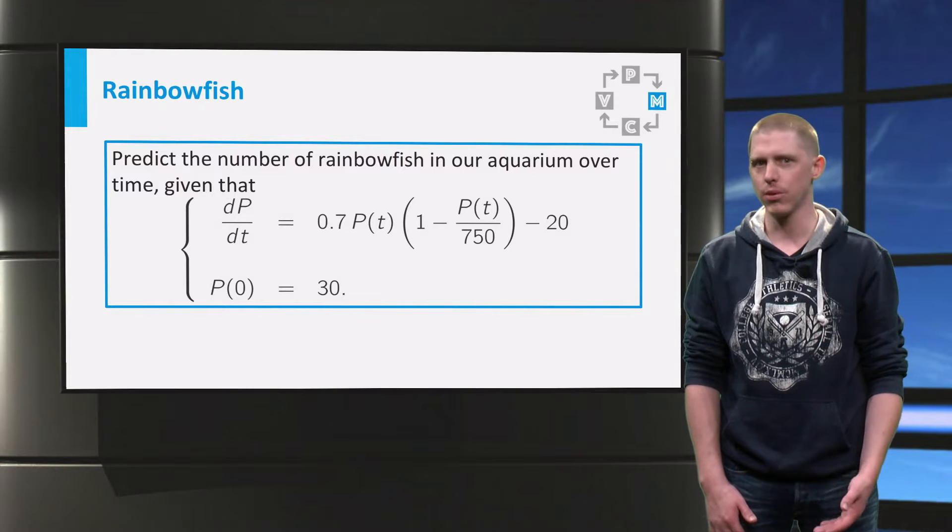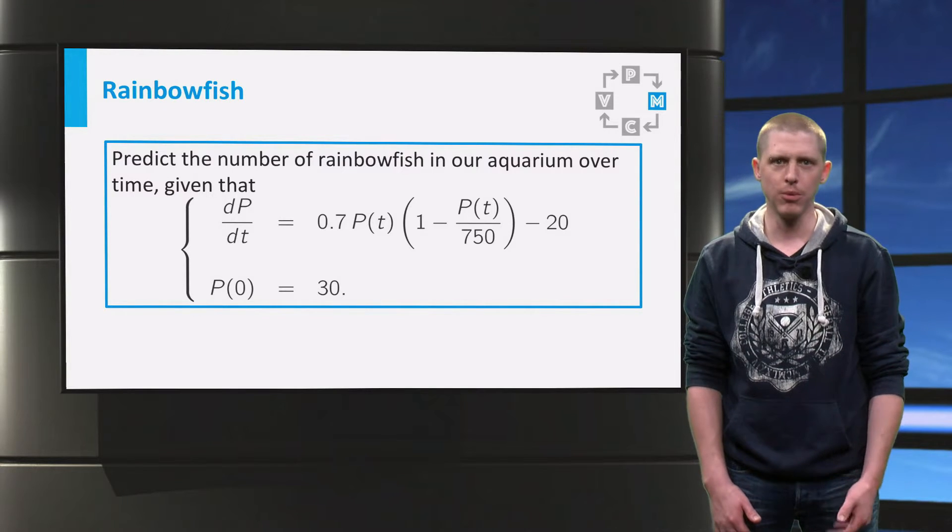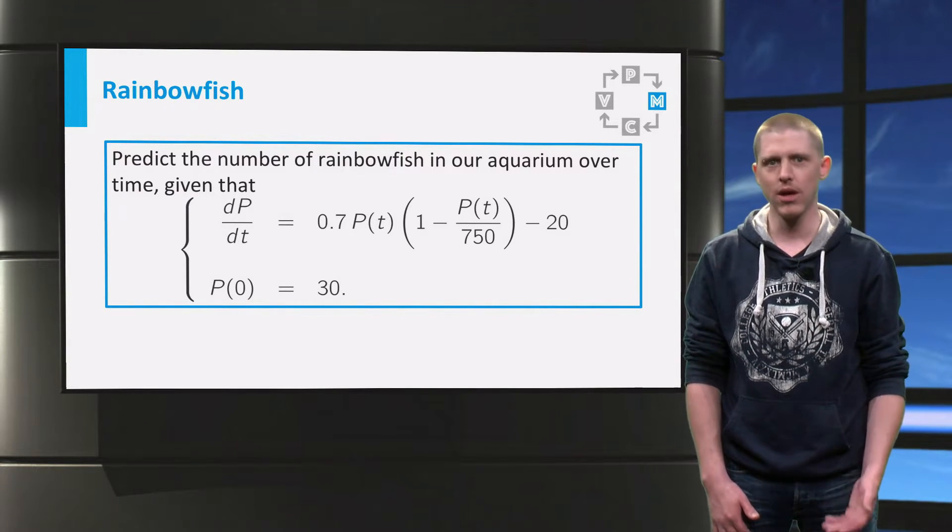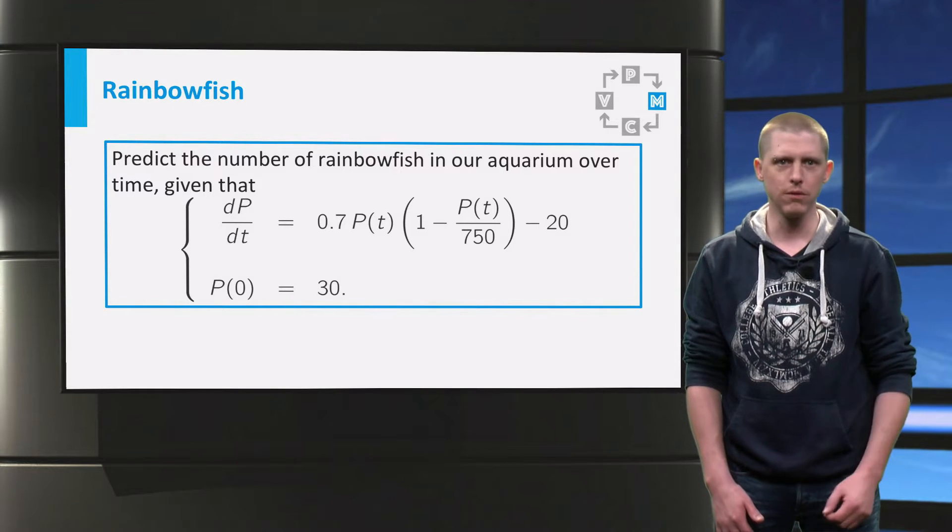Let us consider first the differential equation for the rainbow fish population with limited growth and harvesting, and an initial value of 30.